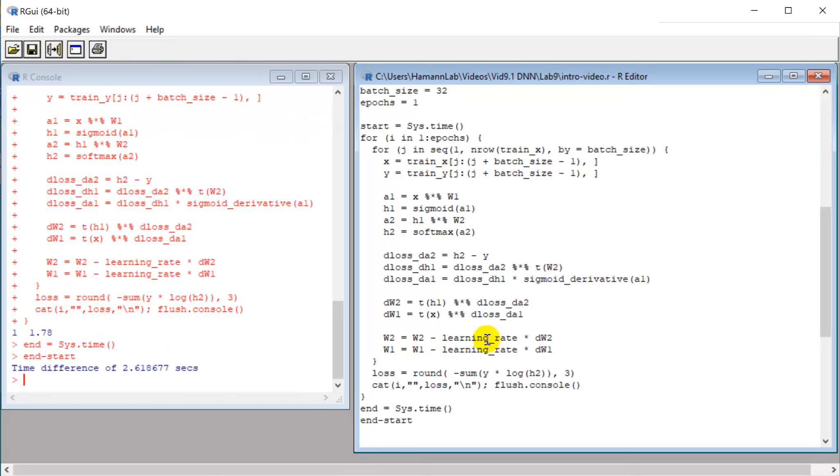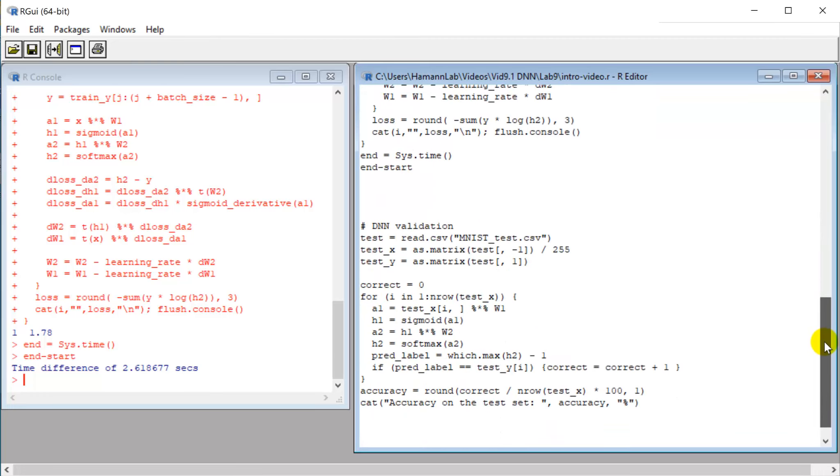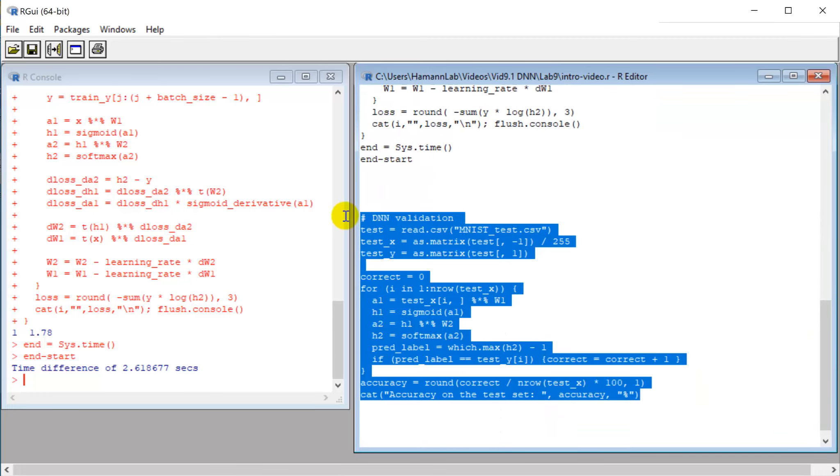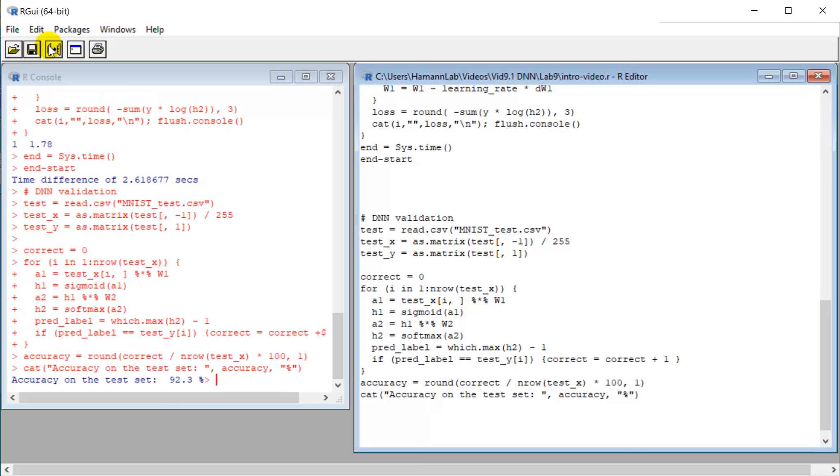So in two and a half seconds, it made a gazillion weight adjustments and learned how to classify handwritten images. Now, I tell you this, but we obviously need to validate it. So for this, we have a separate test data set here. So it's 10,000 images. And we get 92% accuracy. That's pretty great.